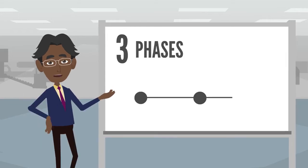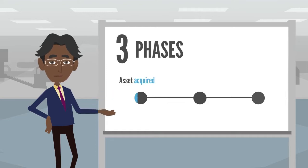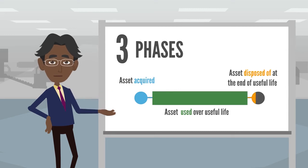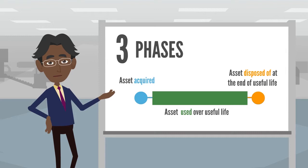There are three phases that an asset goes through. First, an asset will be acquired. Next, it will be used over its useful life. Finally, the asset is disposed of at the end of its useful life. Let's take a closer look at every point of this timeline.